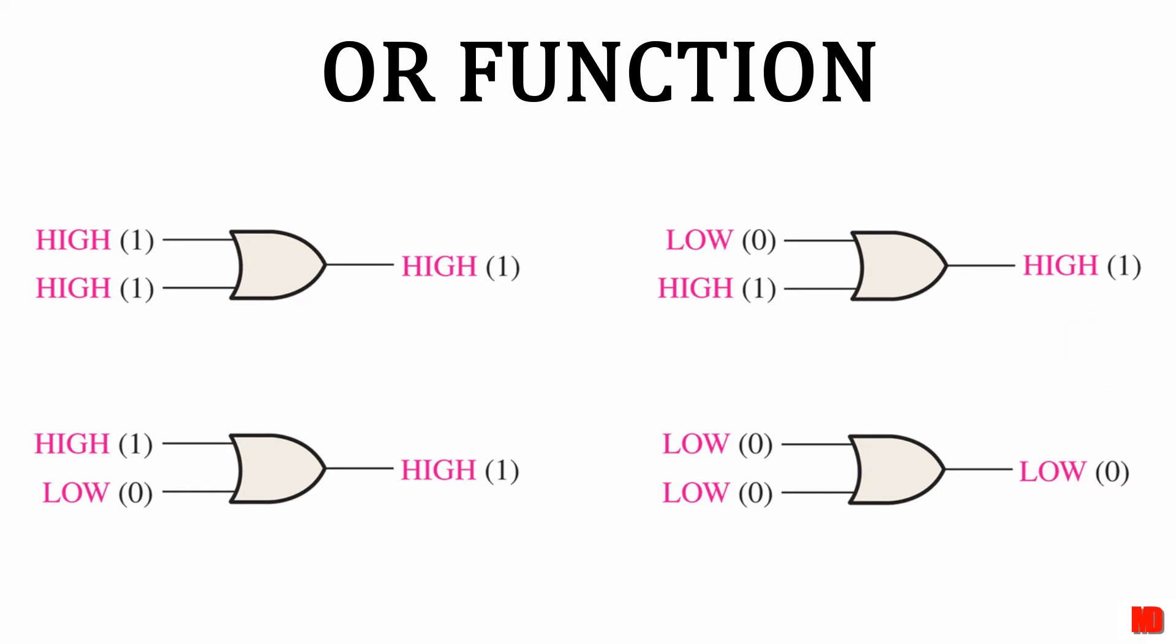This is how the OR gate functions. If either or both of the inputs are high, then the output is high. The only time the output is low is if both inputs are low.